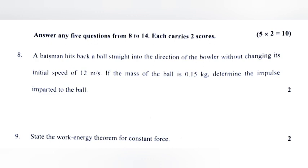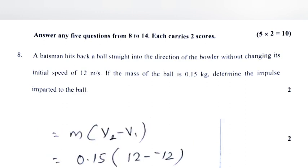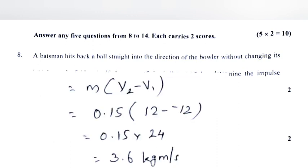Answer: Impulse is equal to change in momentum. I is equal to MV2 minus MV1, that is M into V2 minus V1, equals 0.15 into 12 minus minus 12. Two negatives become positive, that is 0.15 into 24. Answer: 3.6 kilogram meter per second.